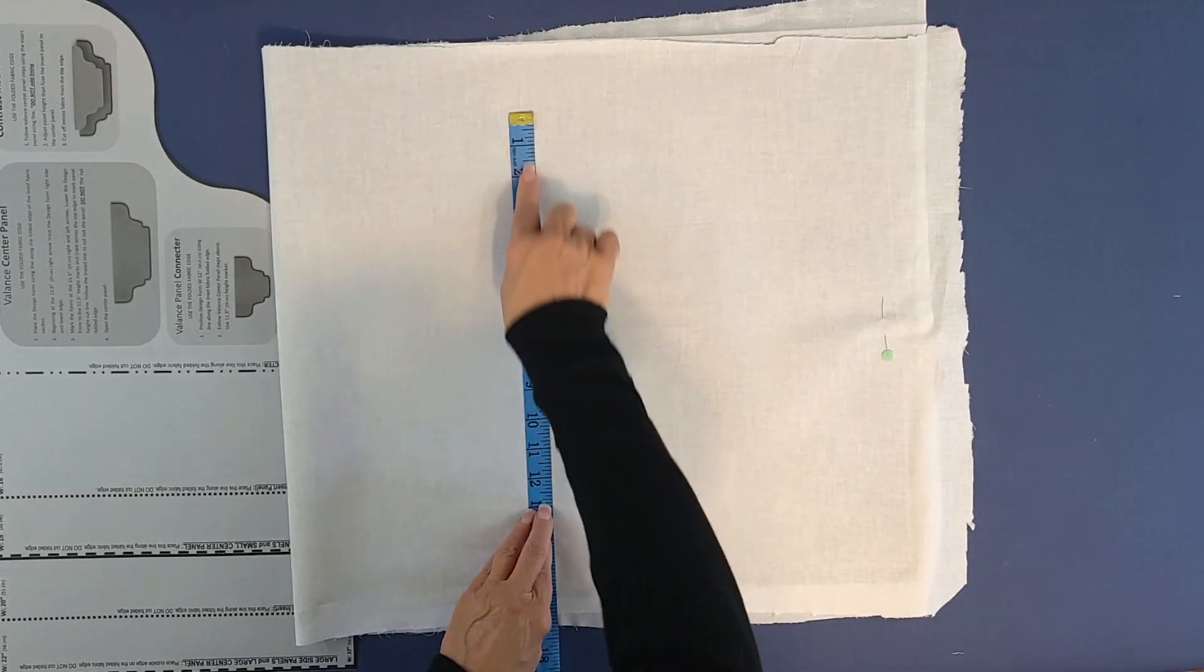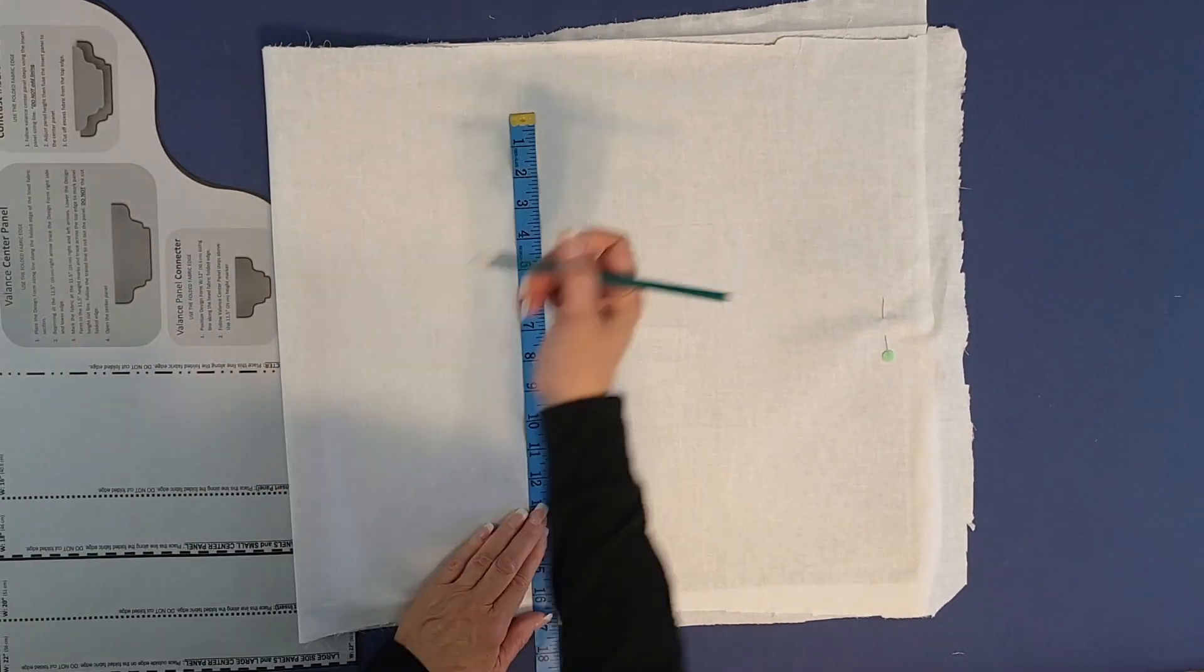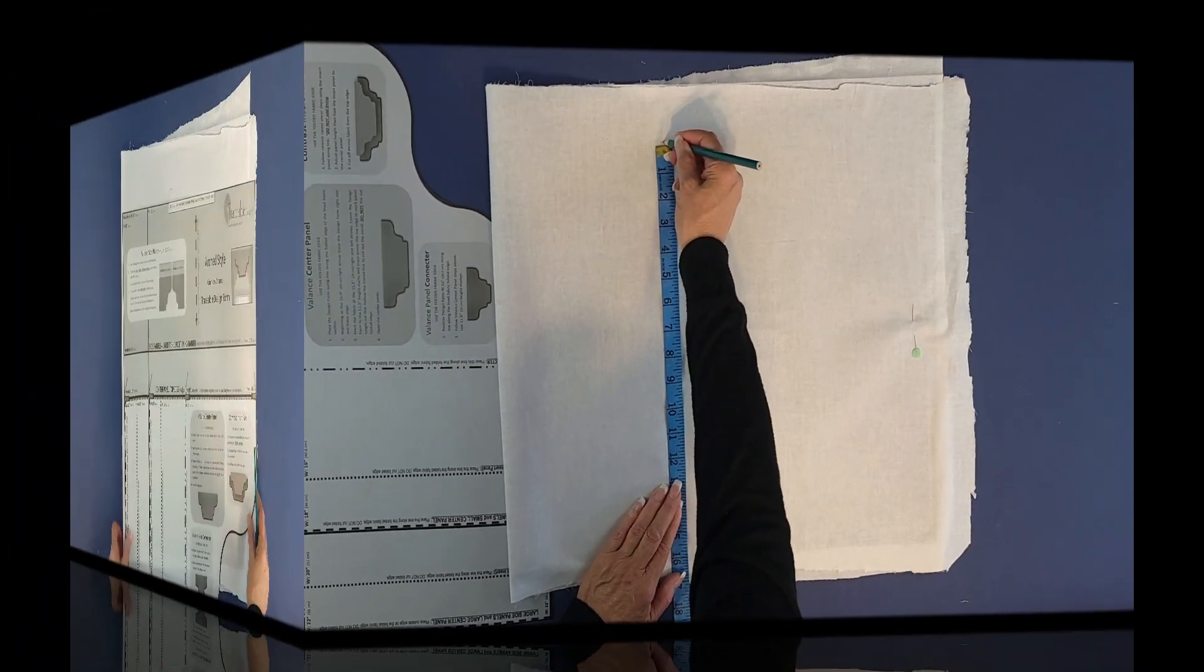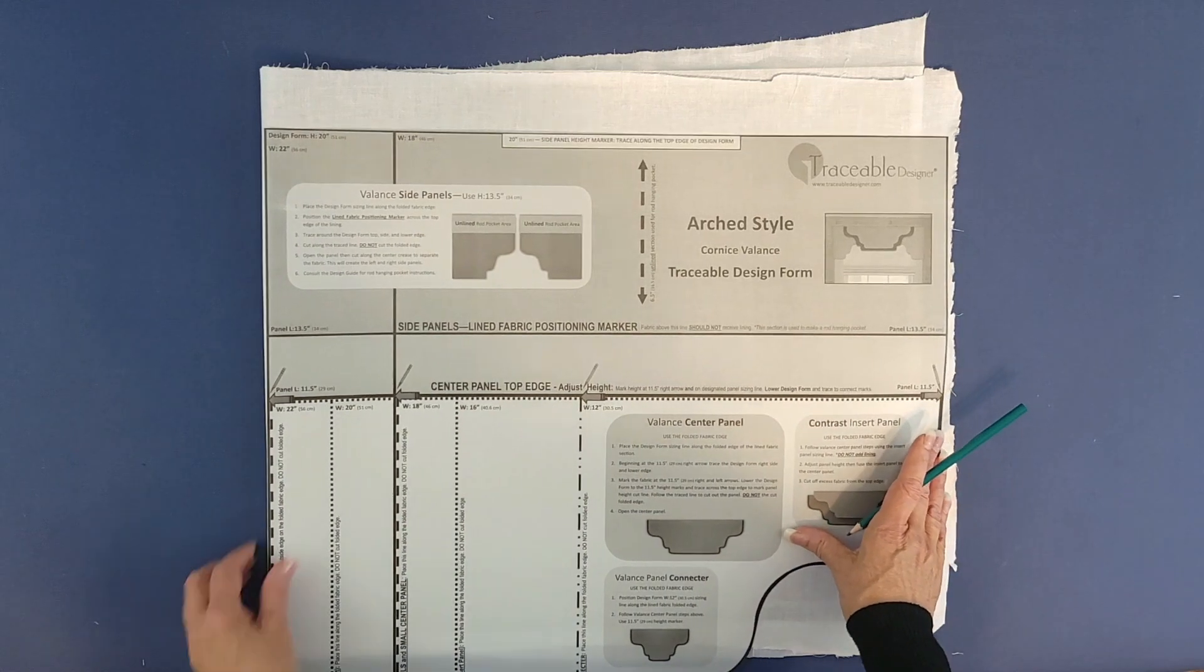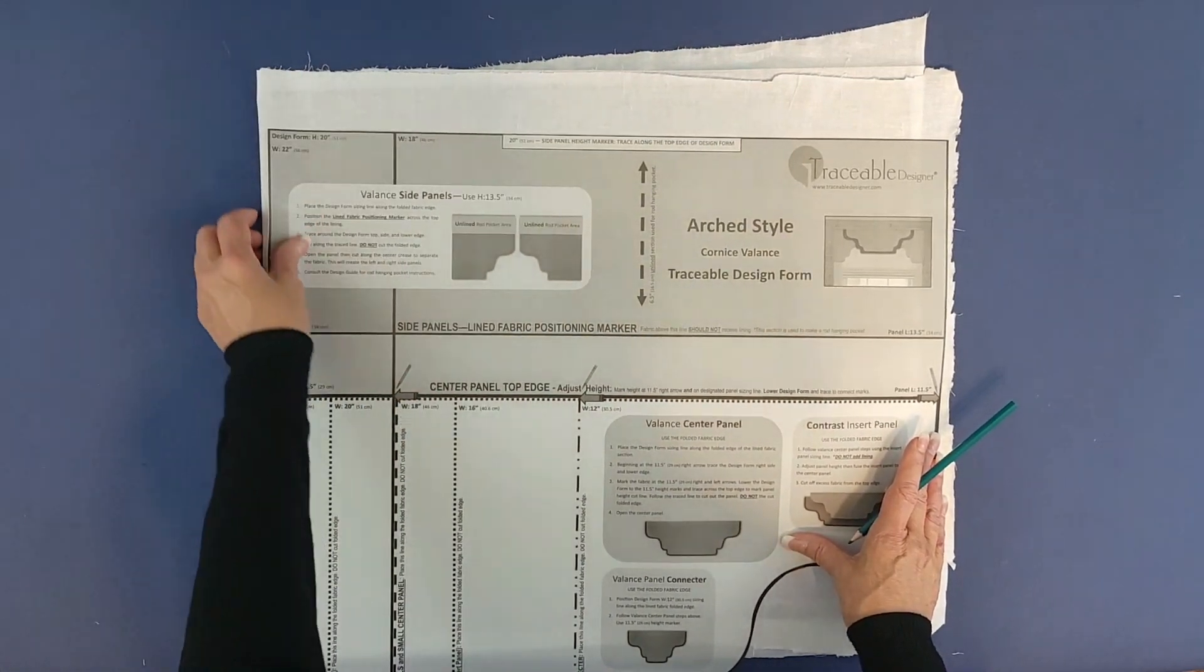First, measure up 15 inches. If yours is longer, it would be a taller piece. Then align the design form along the folded fabric edge. This straightens out the top cut line.